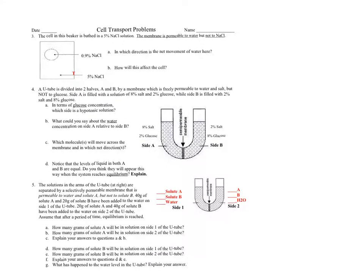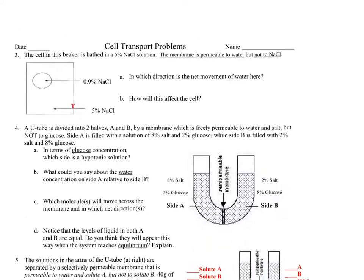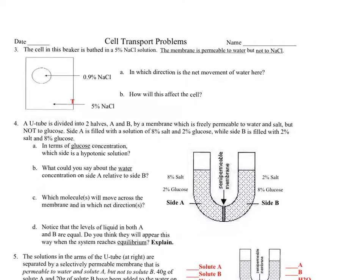The cell in this beaker is bathed in a 5% sodium chloride solution. The membrane is permeable to water, but not sodium chloride. They always give you that — you need to know this so you can make decisions on what's moving. Is the water moving? Is the solute moving? In which direction is the net movement of water? The answer: hypertonic outside.